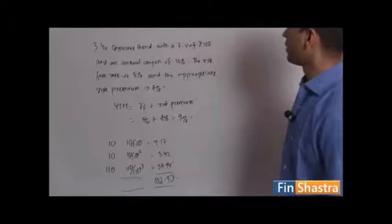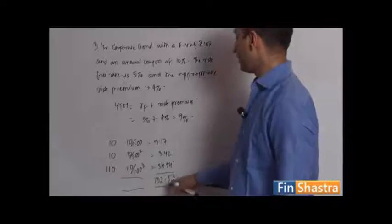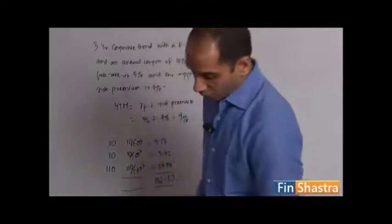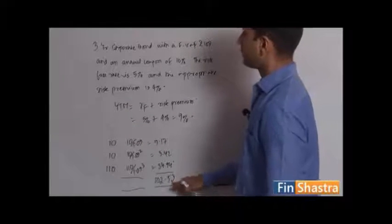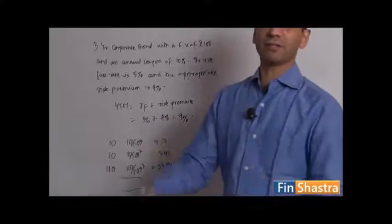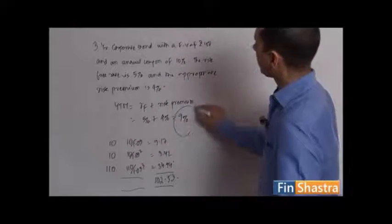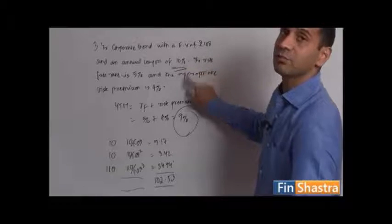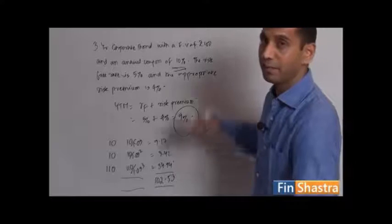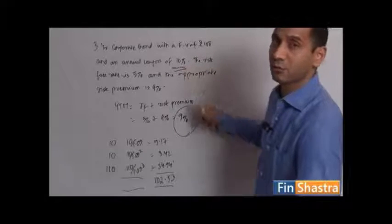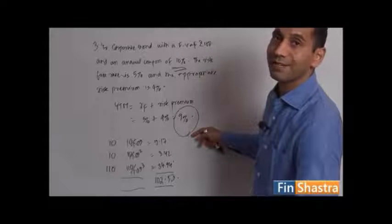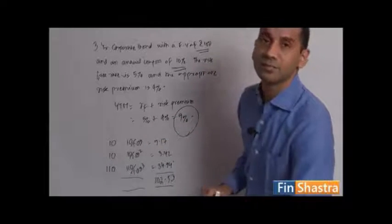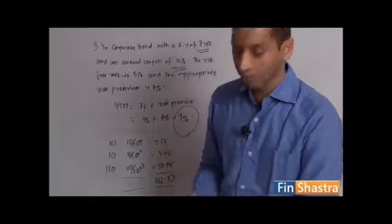The bond trades at 102.53, which is slightly higher than the face value of rupees 100. Why would it trade above face value? The return investors are seeking is nine percent, but the coupon the bond gives is 10 percent. The coupon is more than the yield being sought by the investor, and hence an investor doesn't mind paying a price slightly higher than the face value.